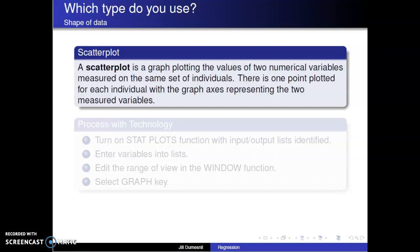A scatterplot is a graph plotting the values of two numerical variables measured on the same set of individuals. There is one point plotted for each individual with the graph axes representing the two measured variables.